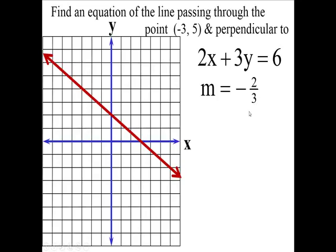The perpendicular is going to slant upward to the right, so the perpendicular slope is going to be positive. If you use the reciprocal of 2 thirds and use a plus, you will have a slope of 3 halves. And that is going to be the perpendicular slope — the slope of the line that's perpendicular to the original line.